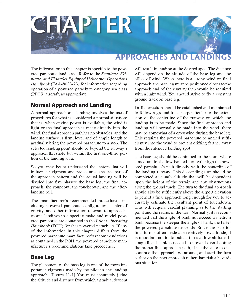Normal Approach and Landing: A normal approach and landing involves the use of procedures for what is considered a normal situation — when engine power is available, the wind is light or the final approach is made directly into the wind, the final approach path has no obstacles, and the landing surface is firm, level, and of ample length to gradually bring the powered parachute to a stop. The selected landing point should be beyond the runway's approach threshold but within the first one-third of the landing area.